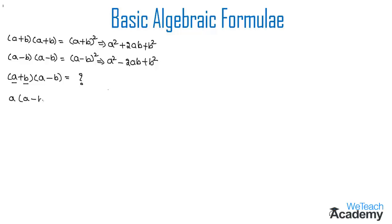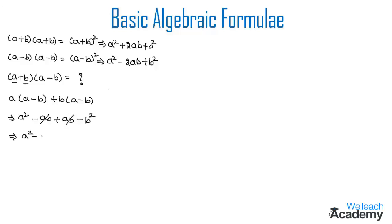On multiplying we get a(a − b) plus b(a − b), which expands to a squared minus ab plus ab minus b squared. The terms −ab and +ab cancel out, leaving us with a squared minus b squared. Therefore the formula for (a + b)(a − b) is a squared minus b squared.